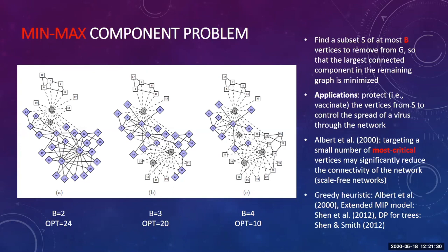In a follow-up paper by Shen and Kolsmic and colleagues in 2012, the authors showed that such a greedy heuristic can produce arbitrarily bad solutions. In response, they provided the first MIP formulation — a linear extended formulation — which can solve this problem exactly. In the same year, they also studied the problem on trees and proposed a dynamic programming formulation. This is the first problem we want to study today; it belongs to the family of critical node detection problems.